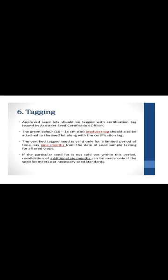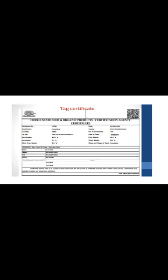The next phase of certification is Tagging. Each seed lot should be tagged with a certification tag issued by a state seed certification officer. The green color tag, 10 to 15 cm in size, is the producer tag and should also be attached to the seed lot along with the certification tag. The certified tag is valid only for a limited period — 9 months from the date of seed sample testing for all seed crops. If a particular seed lot is not sold within this period, revalidation of an additional 6 months can be made only if the seed lot meets the necessary seed standards. The certification certificate and the green color producer tag along with the certified blue color tag are provided by certification agencies.